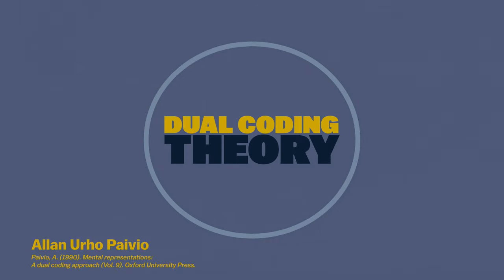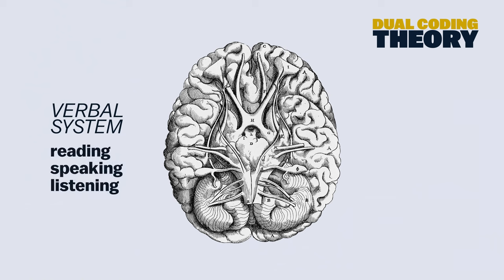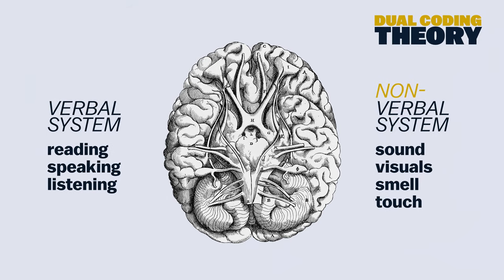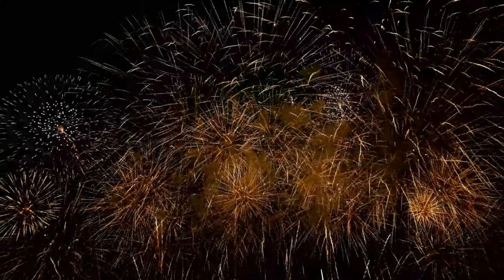This act of combining spoken or written information with nonverbal elements was first described by Alan Pivio, a psychologist. He called it the dual coding theory, and it explains that there are two different systems in our brains that process information. The verbal system is responsible for reading, speaking, and listening to speech. The nonverbal system is responsible for processing sound, visuals, smell, and touch. The dual coding theory emphasizes the point that if both systems are activated simultaneously, we form stronger and more sustainable memories.